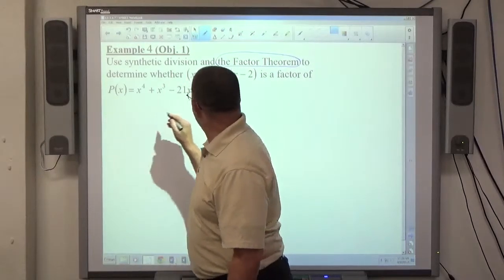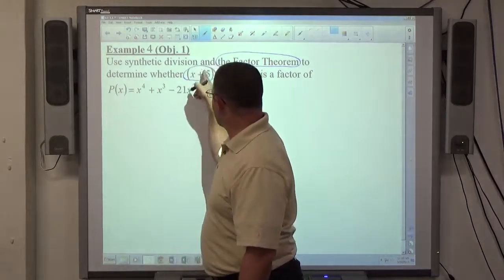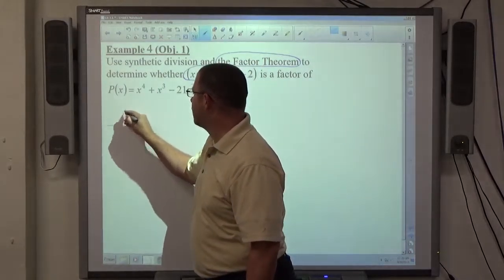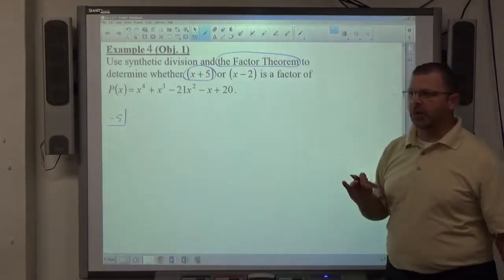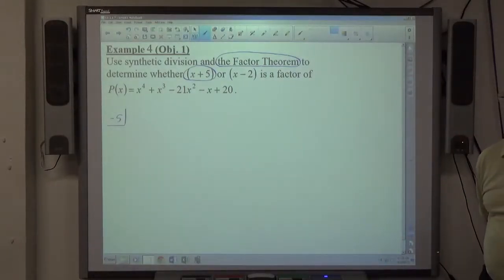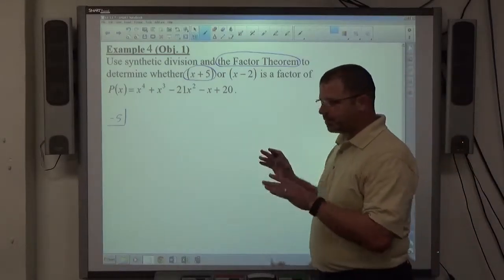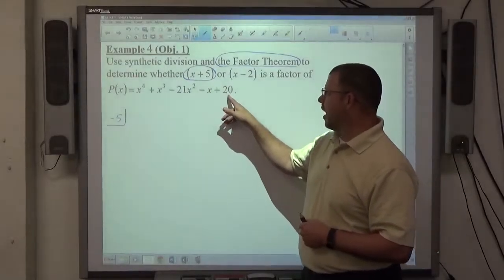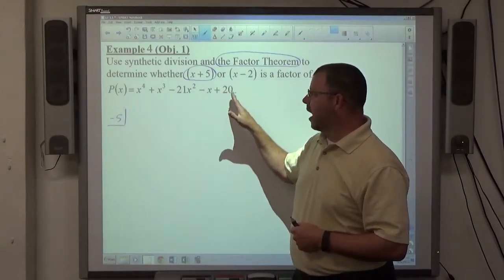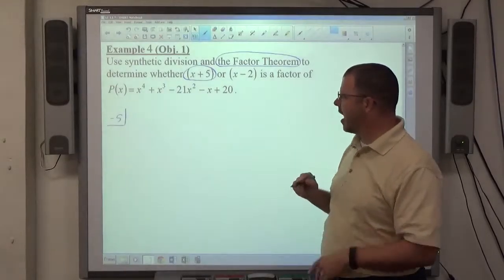Alright, so if I take x plus 5 first and try and divide p of x by x plus 5 using synthetic division, because hopefully doing your homework last night, you realized synthetic division is awesome. It's the greatest thing ever. So a question Tyler asked me that happened in the homework. There was one problem where there was no constant, so in order to account for the fact the constant is missing, you do put a 0 in the constant position, so just make sure that that happens.